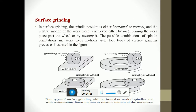In surface grinding, the spindle orientation is either horizontal or vertical, and the relative motion of the workpiece is achieved either by reciprocating the workpiece past the wheel or by rotating it. These possible combinations of spindle orientations and workpiece motions yield four types of surface grinding process. In diagram 1, the grinding wheel is rotated and the work part is moved in a longitudinal direction. In diagram 2, the grinding wheel rotates and the work part also rotates. In diagram 3, the grinding wheel rotates and the work part is moved in a longitudinal direction. In diagram 4, the grinding wheel rotates and the work piece also rotates in a rotational motion.